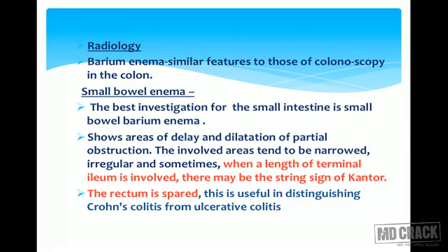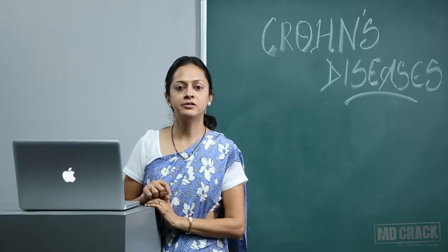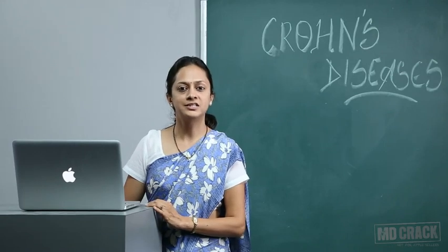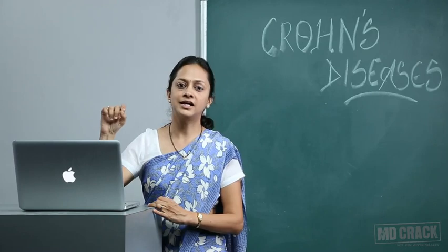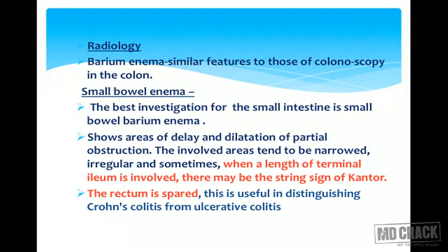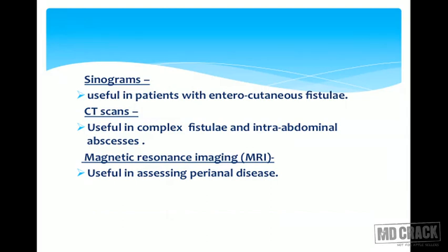Radiology: Barium enema shows similar features to colonoscopy in the colon. The best investigation for the small intestine is small bowel barium enema, which shows areas of delay, dilatation, and partial obstruction. The involved areas tend to be narrowed and irregular, and when the terminal ileum is involved there may be a string sign of Kantor — a commonly exam-asked finding in Crohn's on barium enema at the ileocolic junction. The rectum is spared, which is useful to distinguish Crohn's colitis from ulcerative colitis. Sinography is useful in patients with enterocutaneous fistula. CT scan is useful in complex fistula and intra-abdominal abscesses, and MRI is useful in assessing perianal disease.